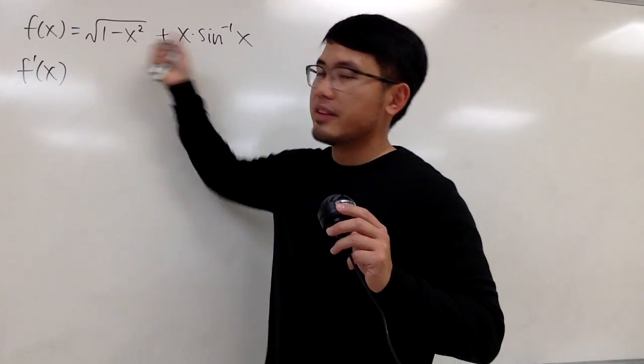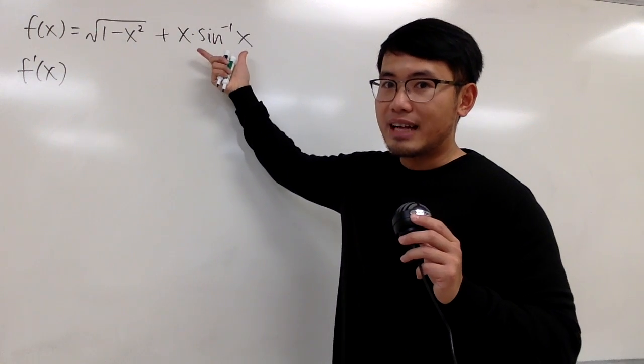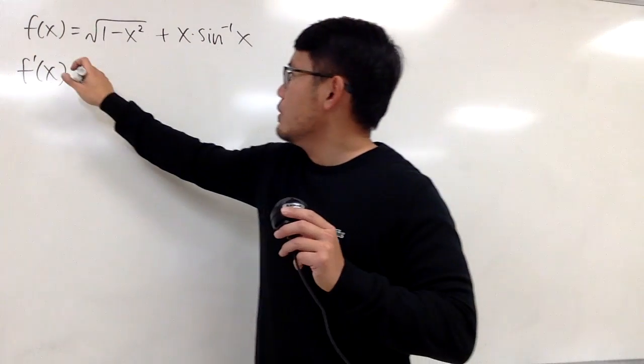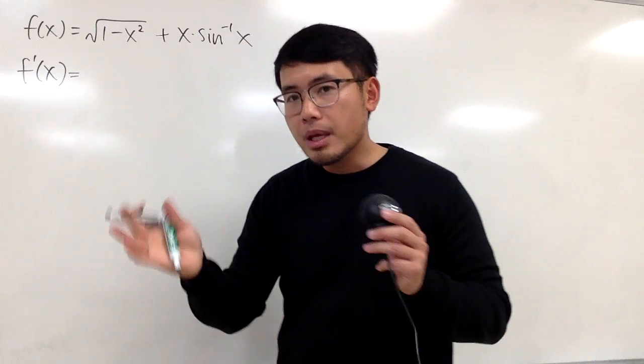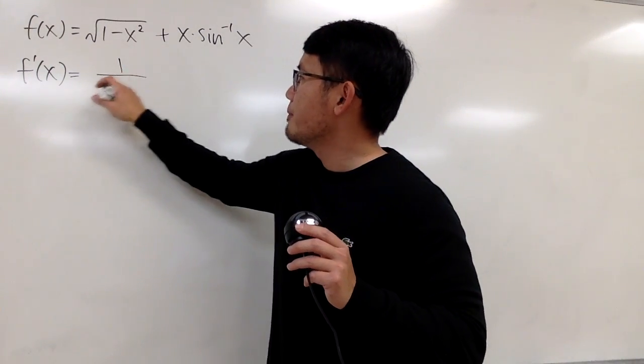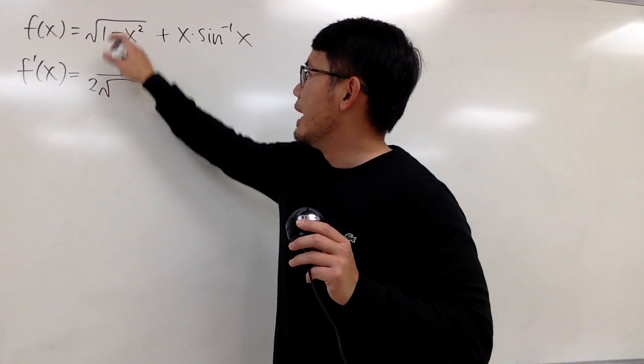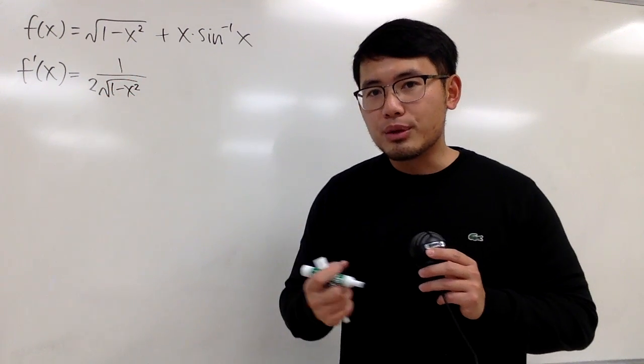First of all, we have a sum of this and that, so we are just going to differentiate this, and then we add the derivative of that. That's pretty much all. So, when we differentiate square root of 1 minus x squared, the big picture is that differentiating square root, we have 1 over 2 square root, and then the inside stays the same right here. And then, you have to use the chain rule.